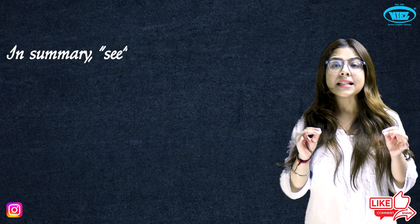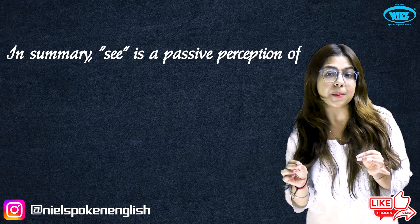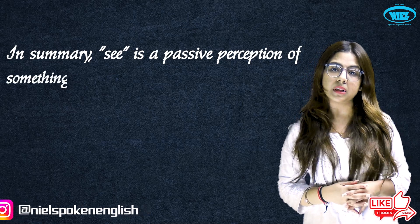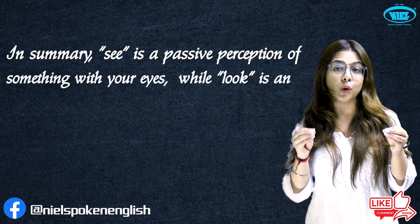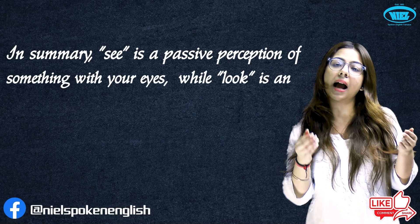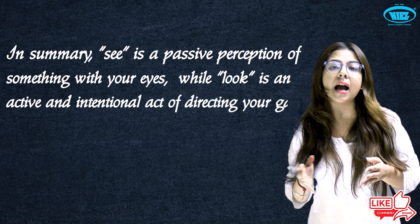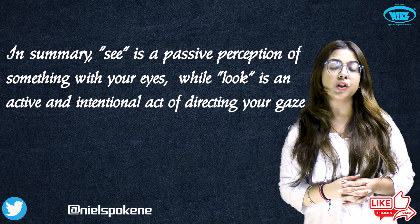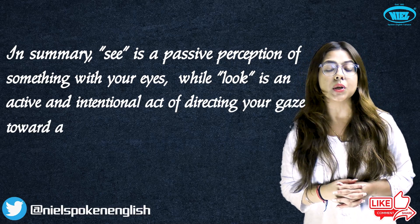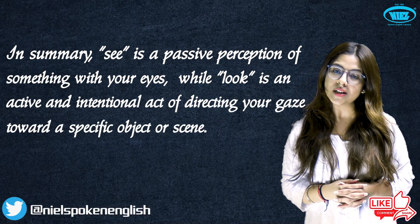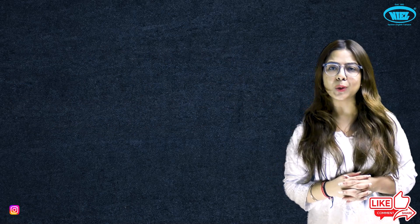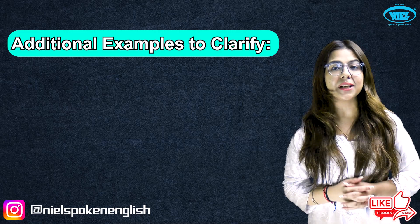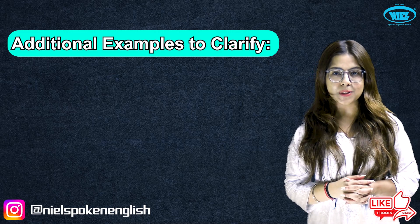In conclusion, 'see' is a passive perception of something with your eyes, and 'look' is an active and intentional act of directing your gaze towards a specific object or scene. Now, as you are clear with the 'see' and 'look' meanings, let's see some additional examples to clarify.